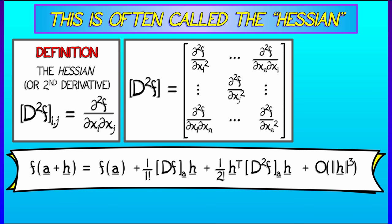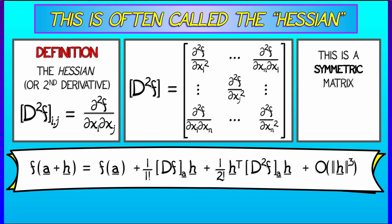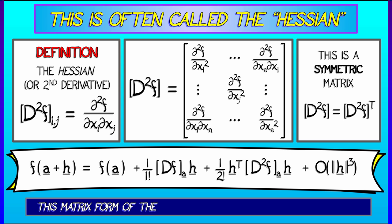So along the diagonals, you have the pure second partials, second partial of f with respect to x1, etc. Now, again, because mixed partials commute, this is a symmetric matrix.